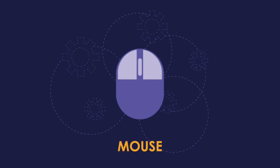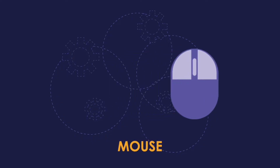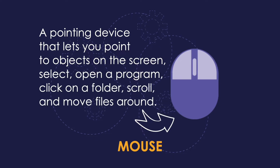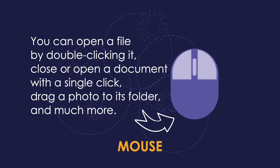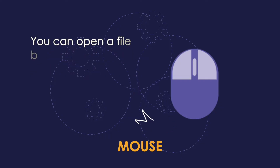Next, we have a mouse. A computer mouse is a pointing device that lets you point to objects on the screen, select, open a program, click on a folder, scroll, and move files around. The mouse gives the user freedom to move the cursor in any direction on the monitor. You can open a file by double-clicking it, close or open a document with a single click, drag a photo to its folder, and much more. The mouse just made the computer much easier to use.